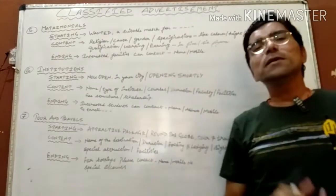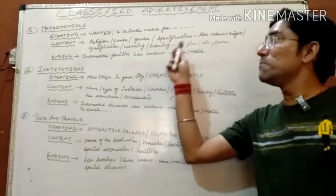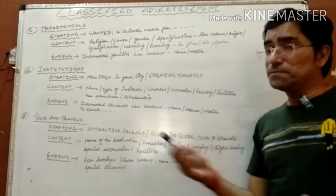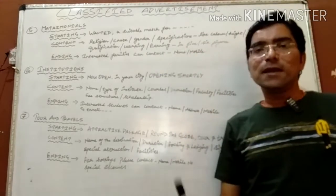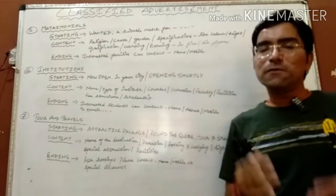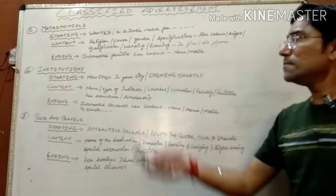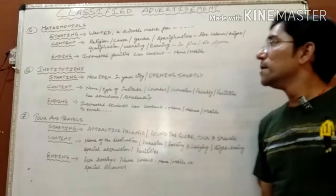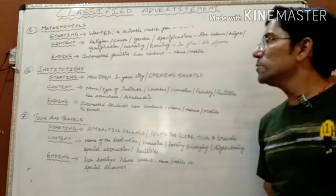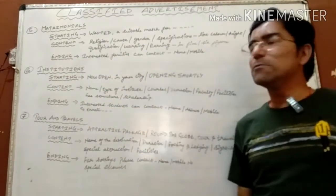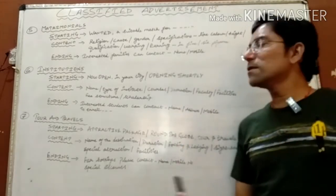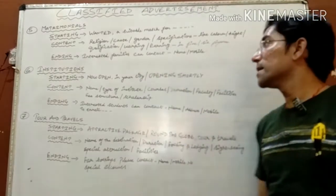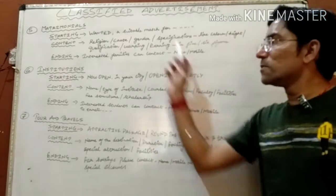To draft the matrimonial classified advertisement: start with 'Wanted a suitable match for a Brahmin boy/girl,' then mention religion and caste, then specifications like height and complexion, then qualification, then the type of job, then the earning in figures as discussed. To end the matrimonial advertisement, write: 'Interested families can contact [name] and [mobile number].'